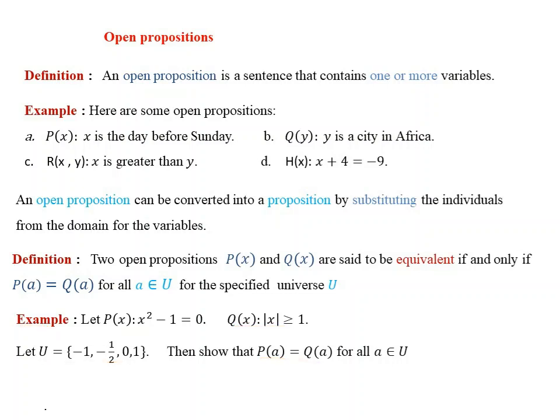Let our open propositions be P of x: x squared minus 1 equals 0, and Q of x: the absolute value of x minus 1 is greater than or equal to 0. We substitute values from the domain, for example x equals minus 1, x equals minus one-half, x equals 0, and x equals 1, to show that P of a is equivalent with Q of a for all a, an element of the domain.